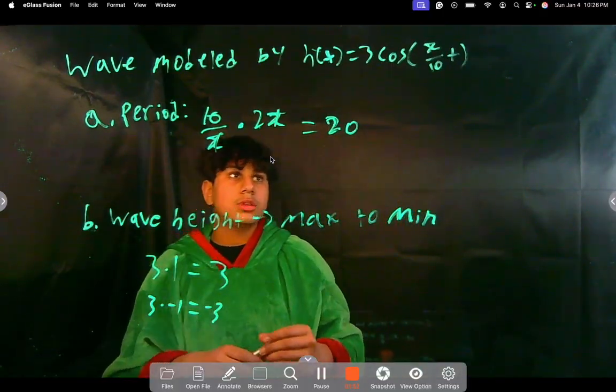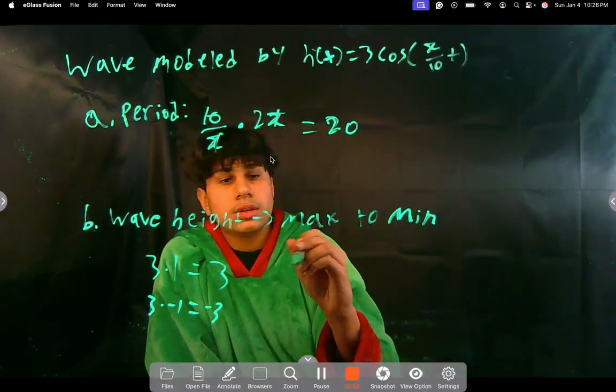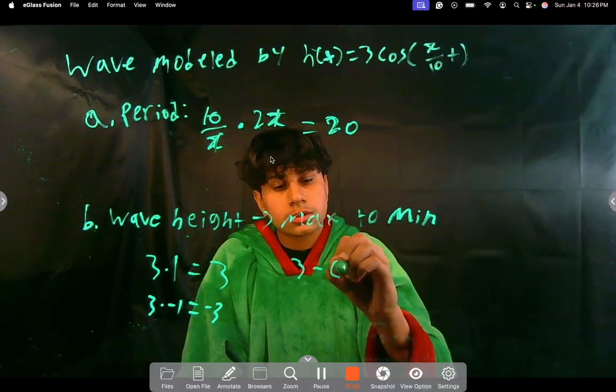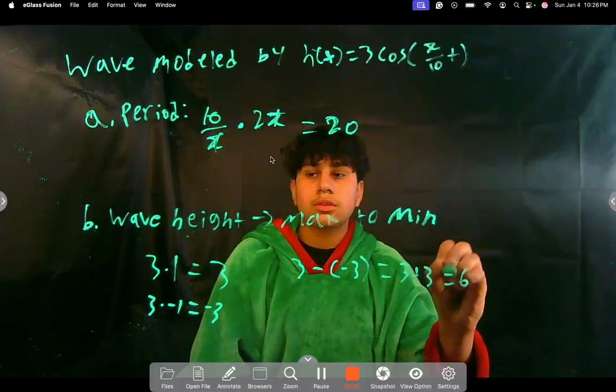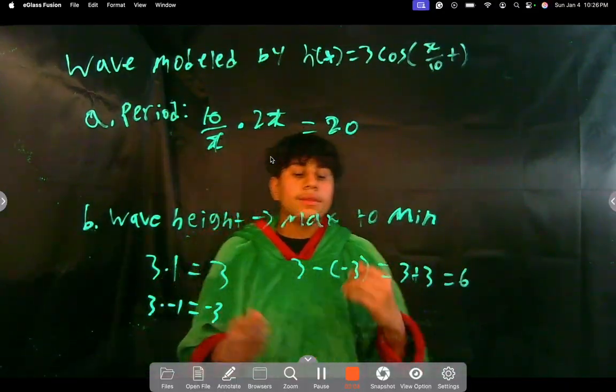From the max to the min, there's going to be 3 minus -3, and that's equal to 3 plus 3, which is 6. So the wave height is 6. Thank you, hope you learned something.